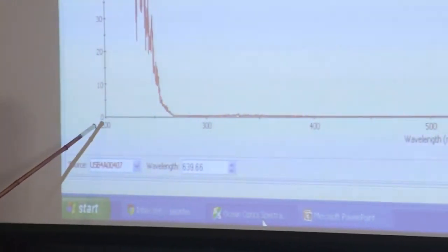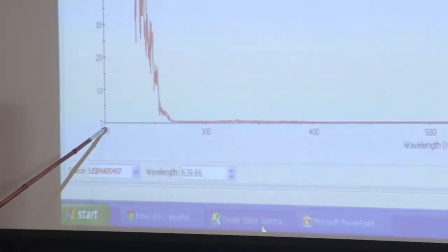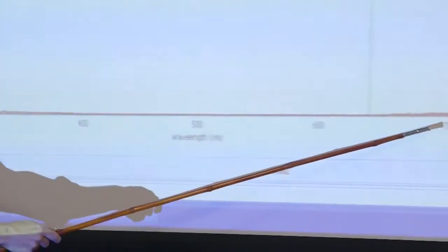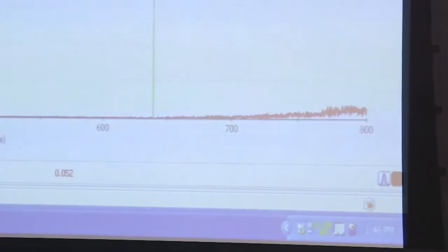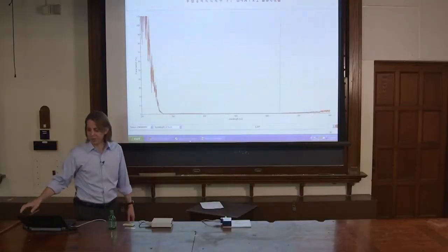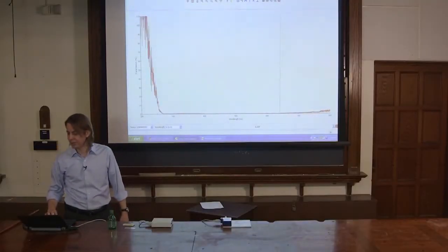So here we're plotting the transmittance, how much light gets through from 200, UV, this is all UV, up to 400. Now this is the visible, 700 into the visible, and then the near IR. So we have a very broad spectral range that we get here because this lamp puts out a lot of light.